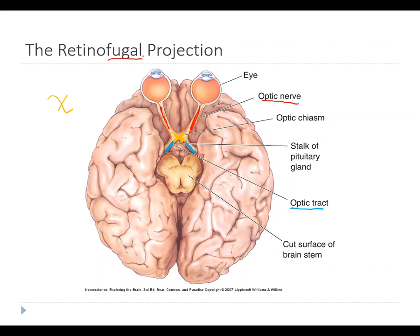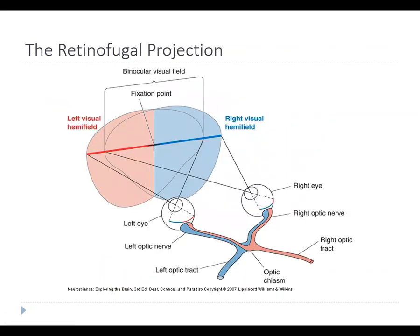This whole pathway is called the retinofugal projection. The word 'fugal' means 'away from,' so it's simply a projection away from the retina. These axons come out of the retina, hit the optic chiasm, and then go into the brain. Some of the axons cross at the optic chiasm and some stay on the same side, and whether they cross depends on which side of the eye they came from.